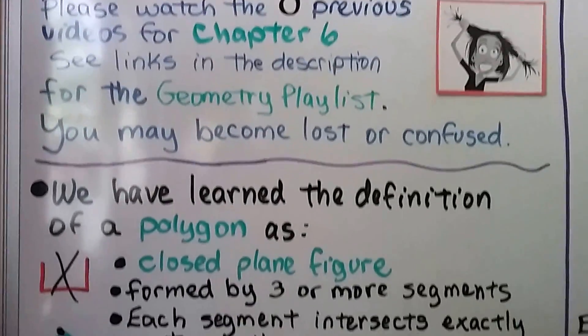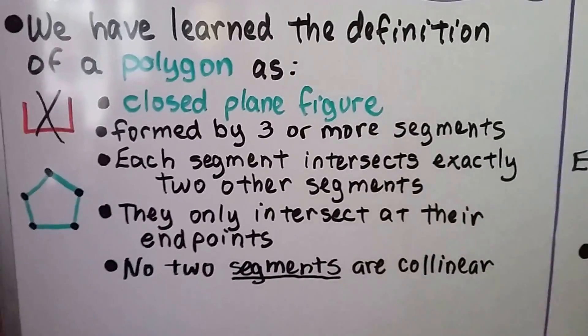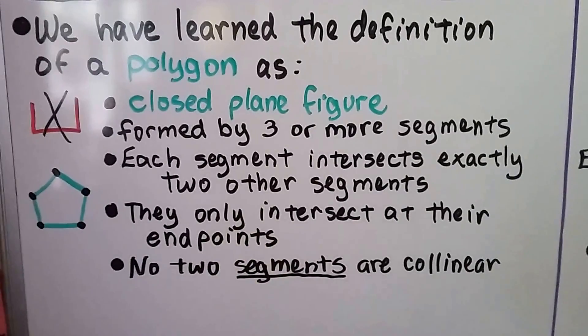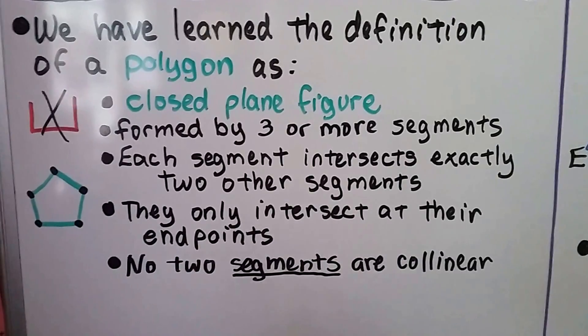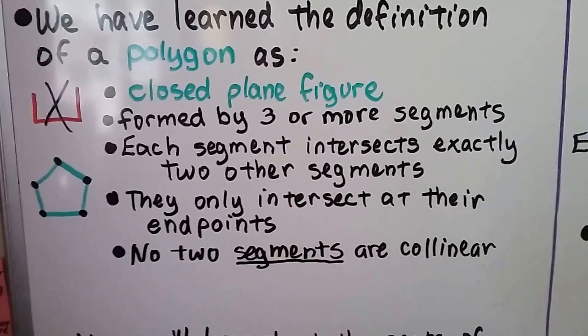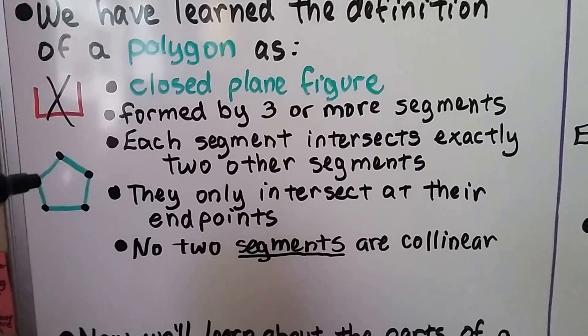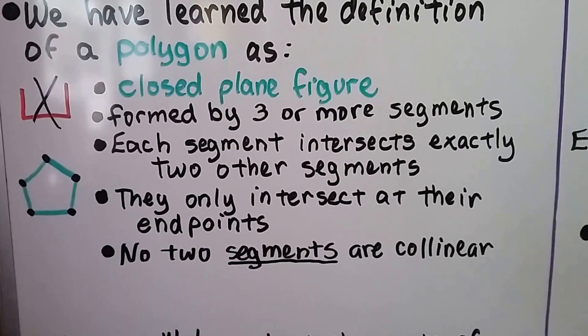We've learned the definition of a polygon before as a closed plane figure, so it can't be open. It's formed by three or more segments. Each segment intersects exactly two other segments, and they only intersect at their endpoints, and no two segments are collinear.